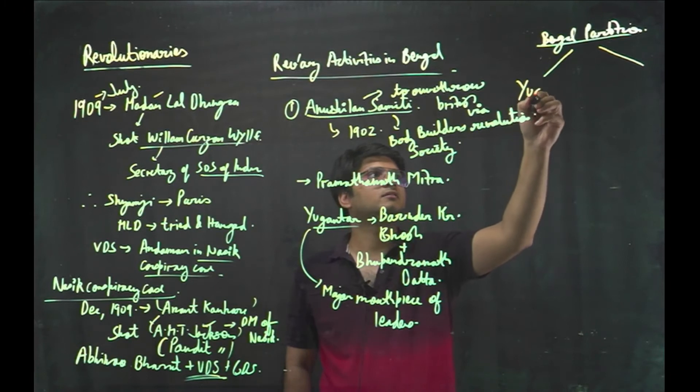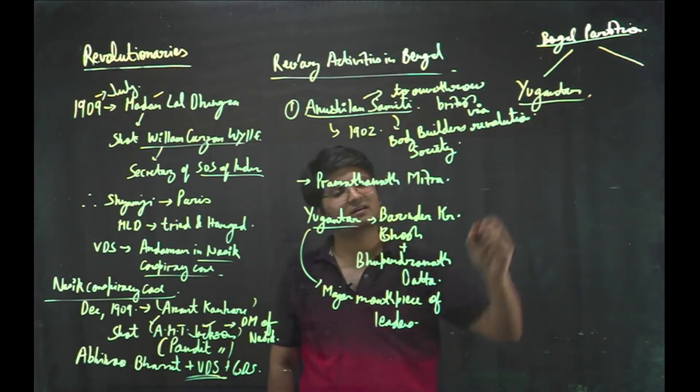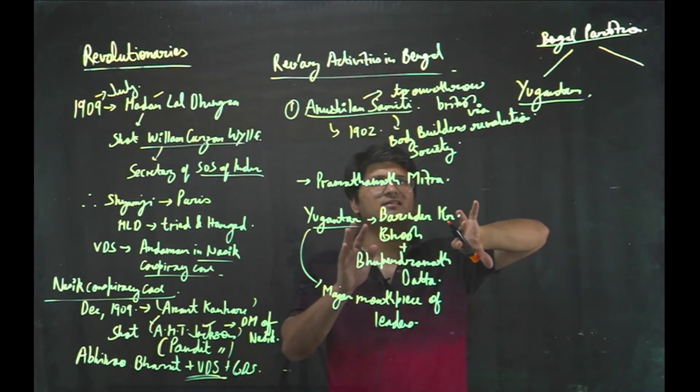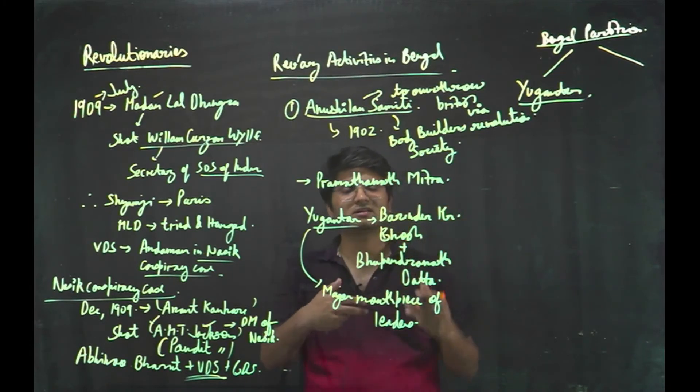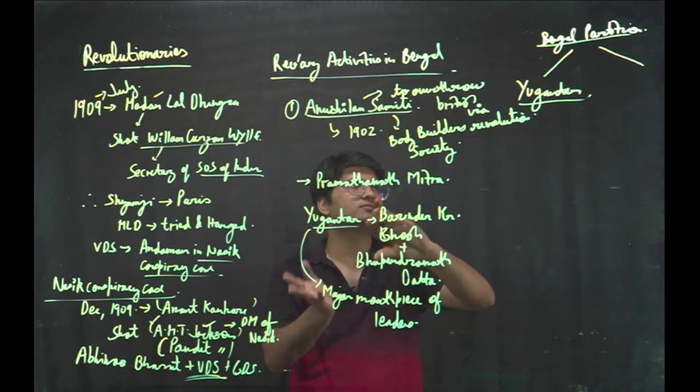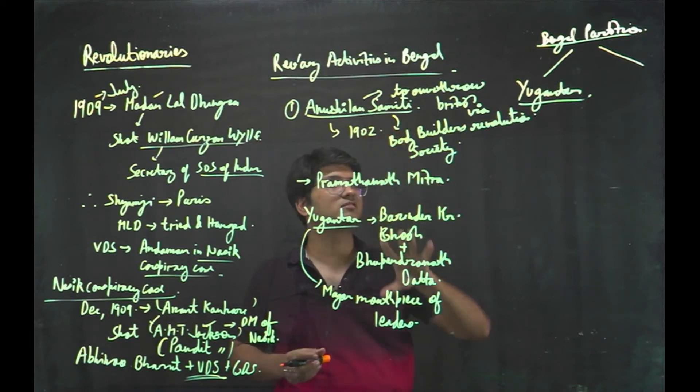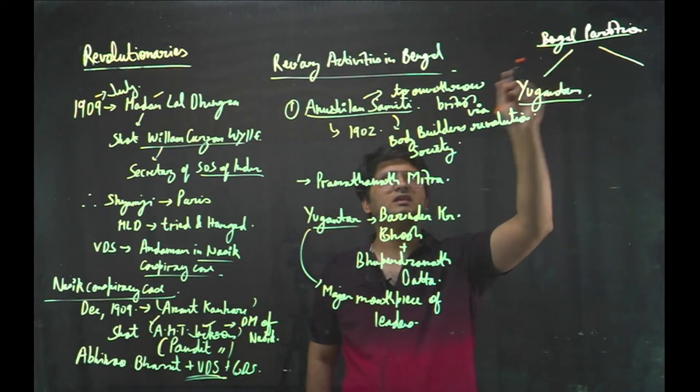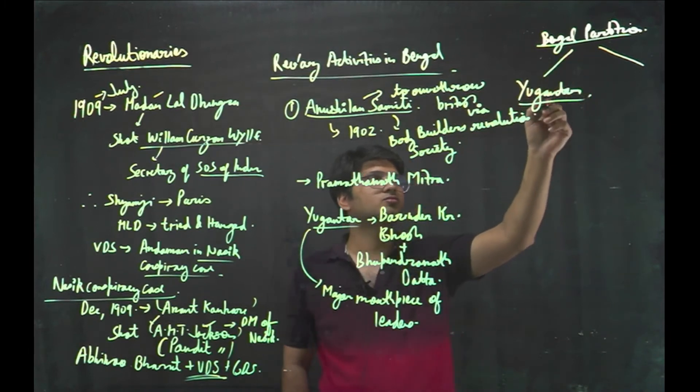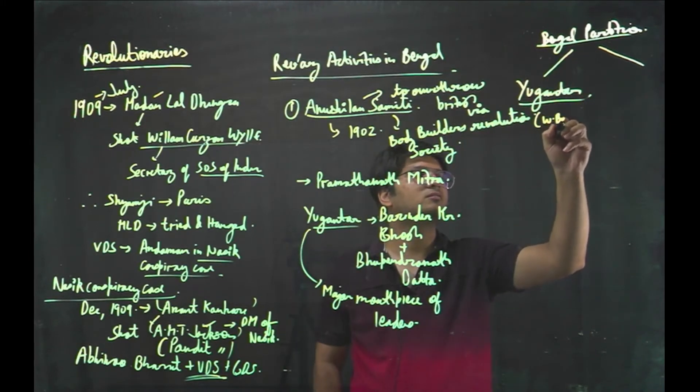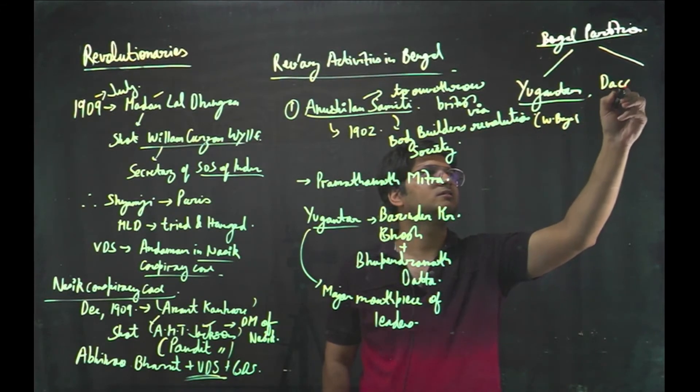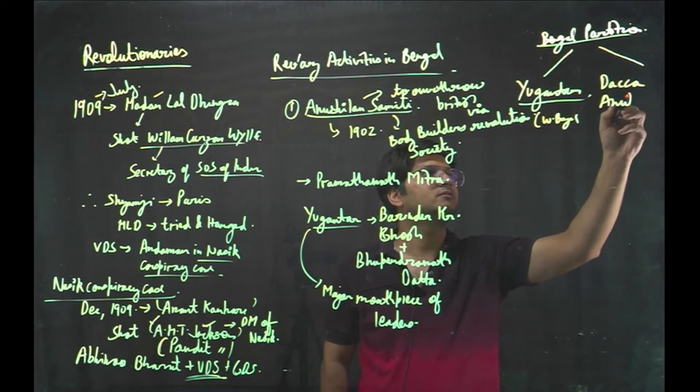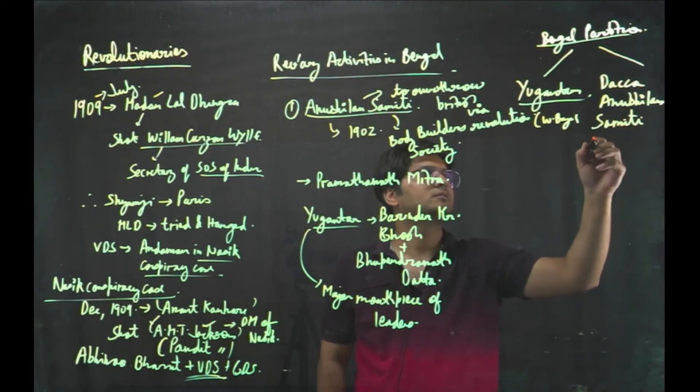The original Anushilan Samiti got divided into two. Yuga Antar. The name of the journal is also Yuga Antar and the name of the organization is also Yuga Antar. And the Anushilan Samiti lost its relevance but you can say that renewed form of Anushilan Samiti was Yuga Antar. Because Yuga Antar was founded by the inner circle people of this Anushilan Samiti.